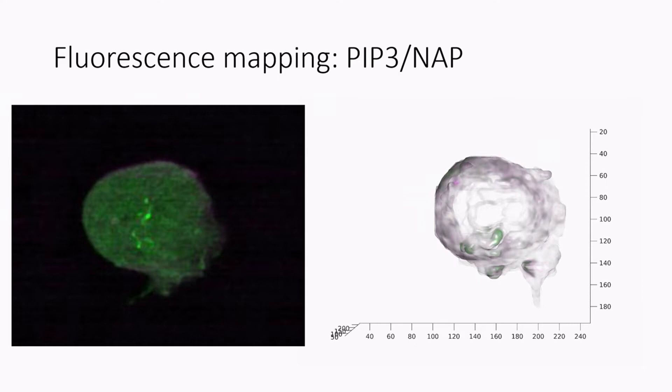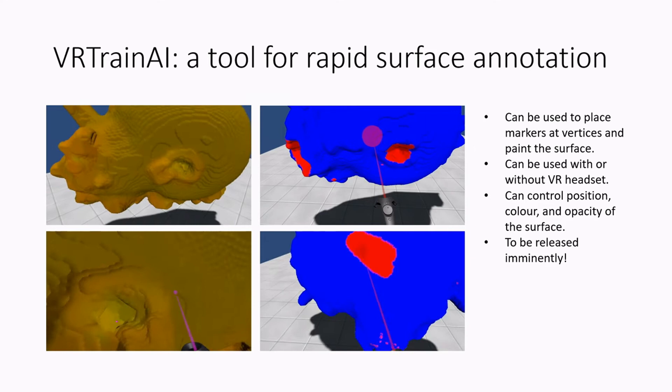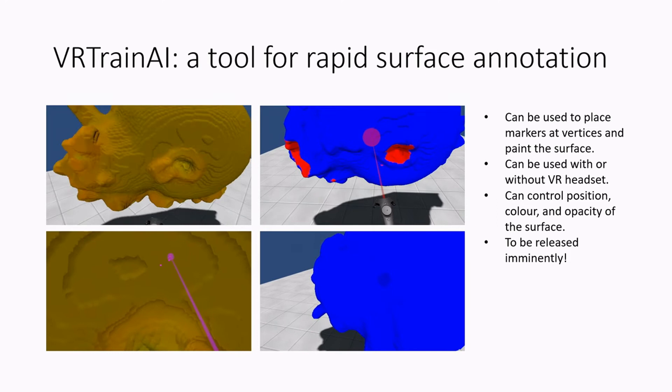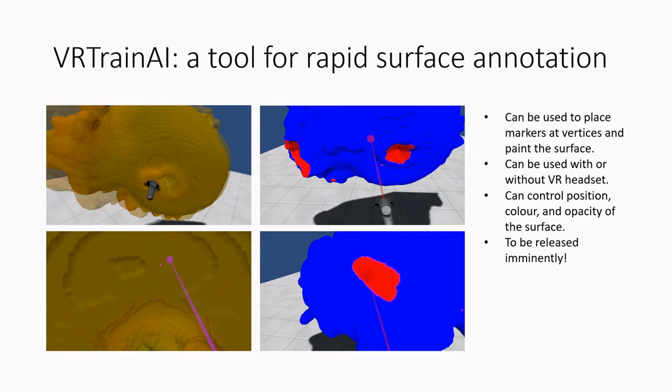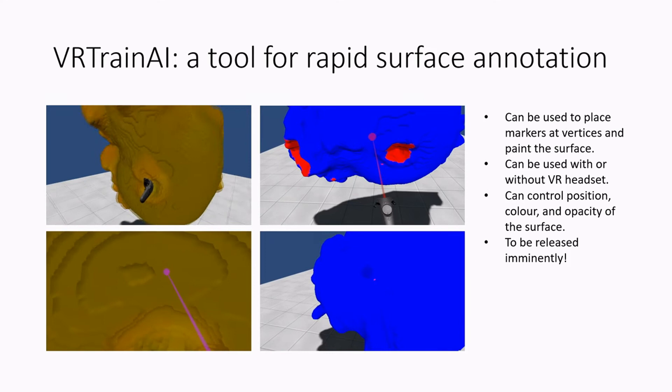So now a little bit on the VR software. So this is VRTrainAI. We will be releasing this very soon. And here's an illustration of a few of the features. The video on the bottom left is the one that's most relevant here, where we place these little pink markers and we can export them as CSV, and then we use them to select our individual cups for analysis later.